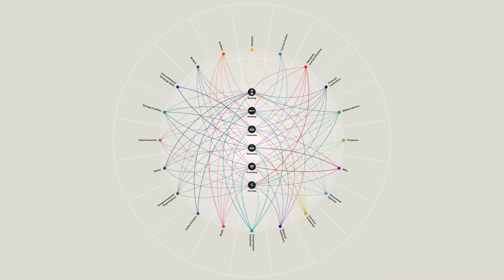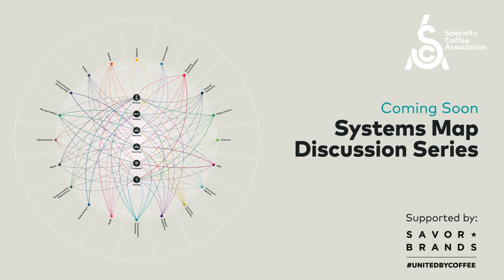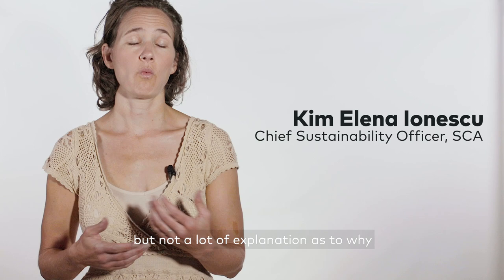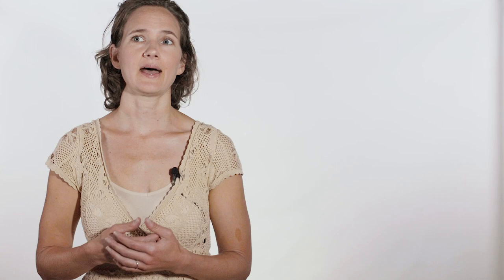So the Systems Map Live Discussion Series is an opportunity to give depth to this tool that the SCA has created. There's a lot of complexity to the map as it is, but not a lot of explanation as to why the relationships exist between actors and activities. There's not really a way to depict in this map how these actors on the outer ring are connected to one another.